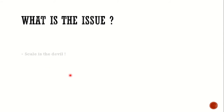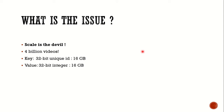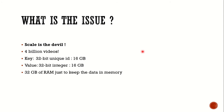The issue is scale. If we are talking about 4 billion videos, what would be the problem? We would be requiring at least 32 bits to represent the unique ID — that is, 16 GB of memory. And similarly, another 16 GB would be required to store the view count. That means we are talking about 32 GB of RAM just to keep the data in memory.